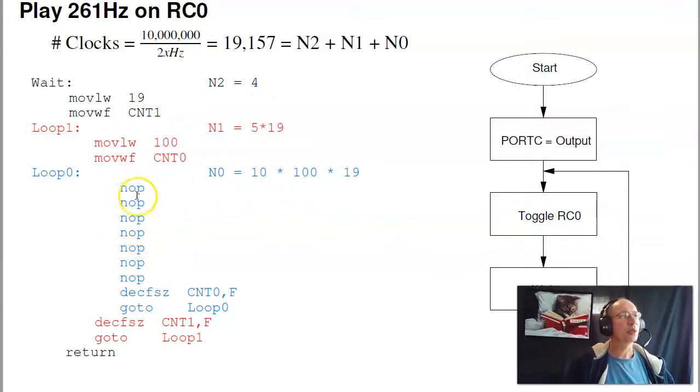So this is a wait loop. The way it works is this inner loop right here in blue has 9 instructions plus go to. This burns 10 clocks. This loop is called 100 times 19 times. What happens is counter 0 is initialized to 100. Then I go through this loop, decrement counter 0. I'm now at 99, repeat. 98, 97, 96. When I get to 3, 2, 1, 0, then I kick out. So I do this loop 100 times. This outer loop in red is executed 19 times. Counter 1 starts at 19, goes to 18, 17, 16. When I get to 0, I kick out.